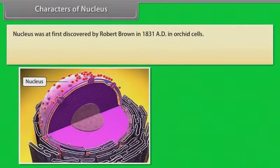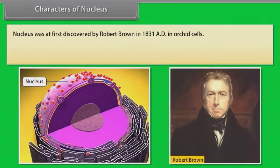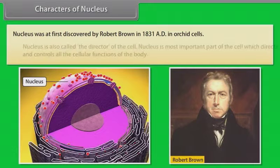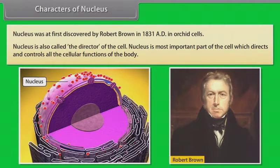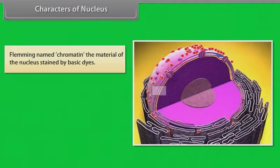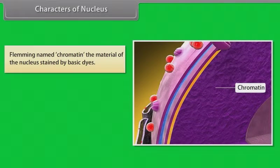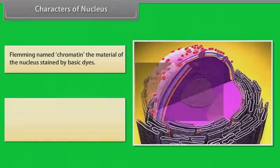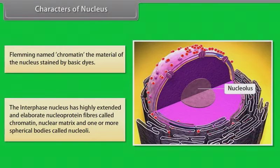Characters of nucleus: Nucleus was first discovered by Robert Brown in 1831 AD in orchid cells. Nucleus is also called the director of the cell. It is the most important part of the cell, directing and controlling all cellular functions. Fleming named chromatin the material of the nucleus stained by basic dyes. The interphase nucleus has highly extended nucleoprotein fibers called chromatin, a nuclear matrix, and one or more spherical bodies called nucleoli.